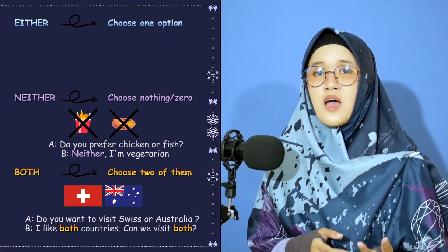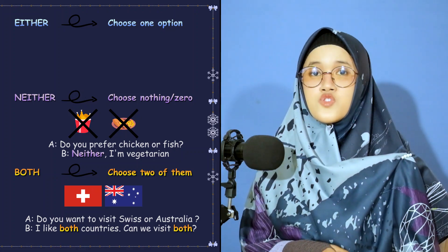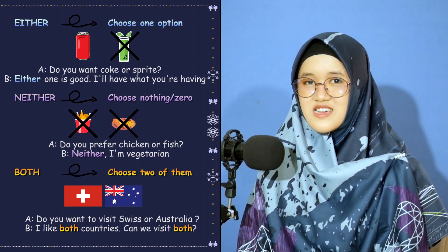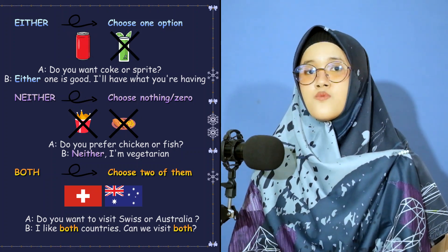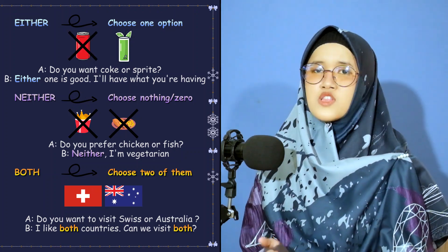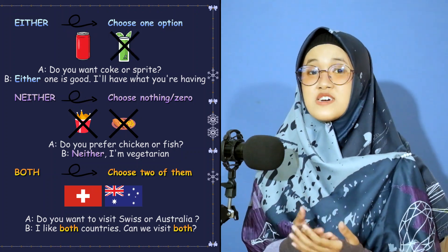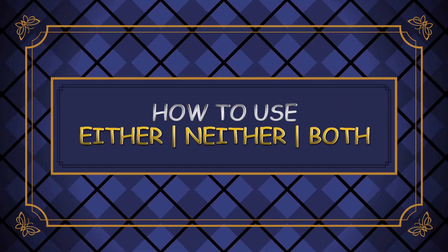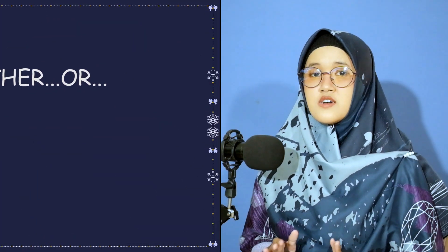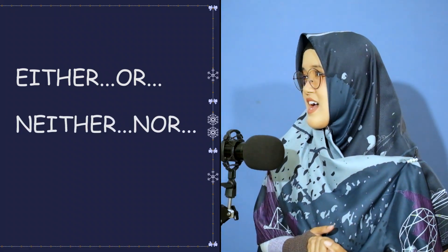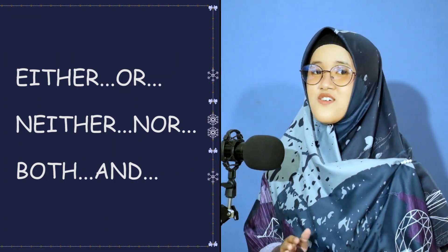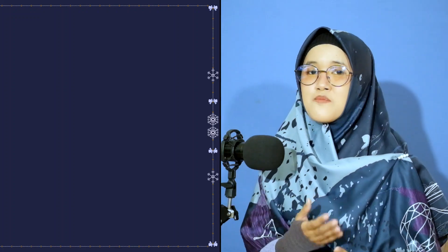Do you prefer chicken or fish? 'Neither — I'm a vegetarian.' We use 'neither' to disagree with both options given to us. Do you want a Coke or Sprite? 'Either one is good, I'll have what you're having.' We use 'either' to say that we don't really have a preference since both options are okay.